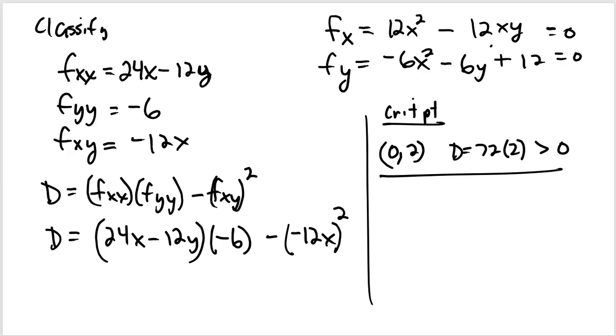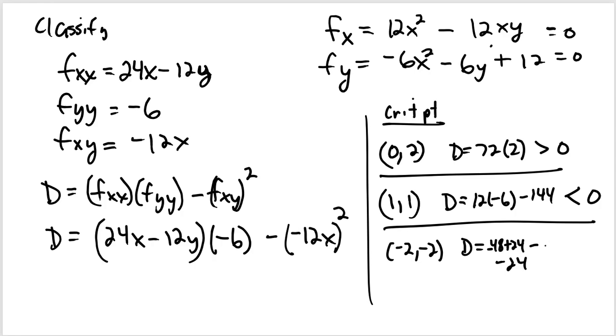At the point (1, 1), we get that D is going to be 12 times -6 minus 144. That is less than 0. And at the point (-2, -2), we get that D is going to be 48 plus 24 - that's -48 plus 24, that is -24. And from that we subtract 24 positive squared. So that's definitely negative.